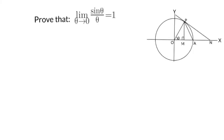In this video we are going to prove that limit theta tends to 0, sin theta over theta is equal to 1, with the help of a figure. In this figure, P is any point on a circle whose center is at O, and OP makes angle theta with the horizontal x-axis. Line PN is tangent to the circle at point P, and line PM is perpendicular to the horizontal axis OAX.